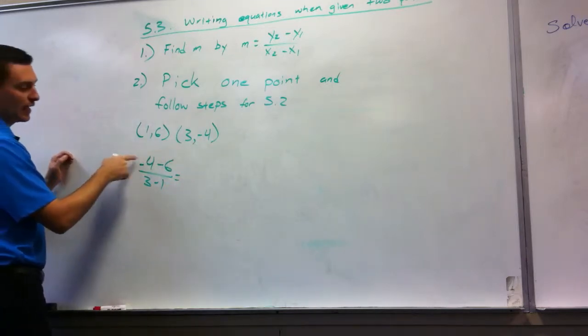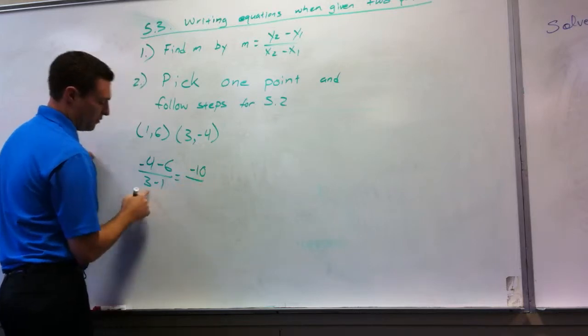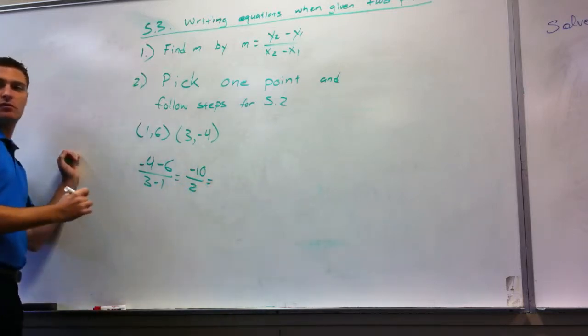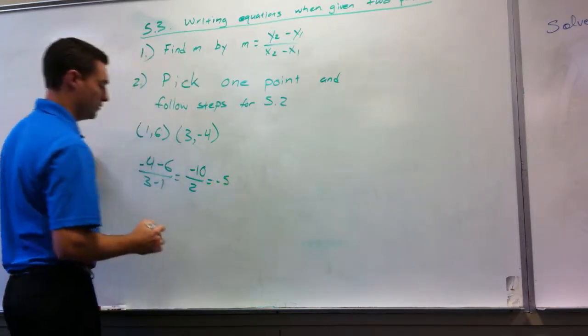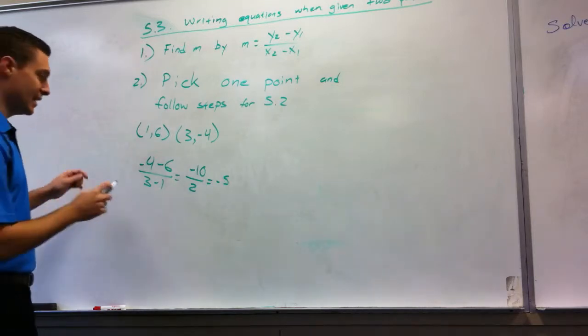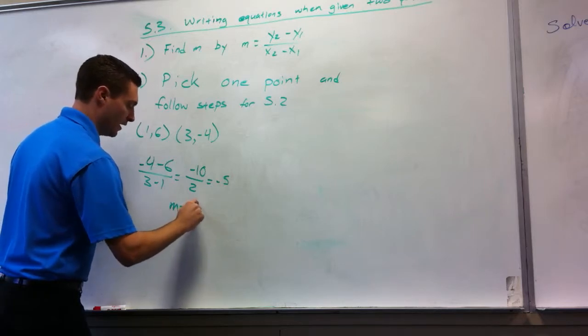Simplify this, negative 4 minus 6 is? Negative 10. 3 minus 1 is? 2. Simplifies to? Negative 5. So, what does that tell me? That's m equals negative 5.